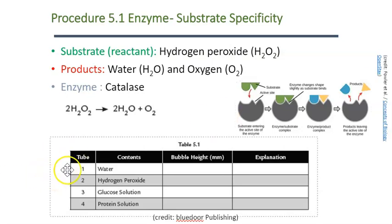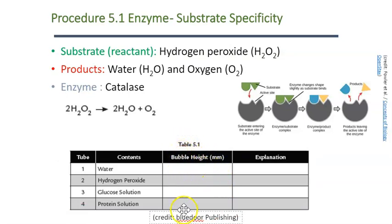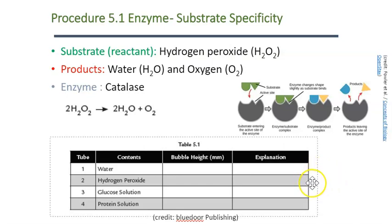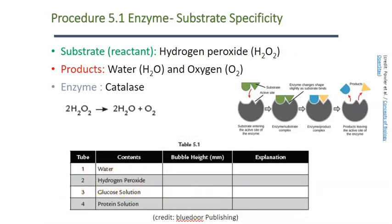We're going to put our enzyme catalase with water in one test tube, hydrogen peroxide in a second, glucose solution in the third, and a protein solution in the fourth. We're going to observe the oxygen gas produced in the form of little oxygen bubbles and measure that. What we're looking for is whether the catalase reacted with each substance — did it react with water, hydrogen peroxide, glucose, or the protein solution? We can determine that based on whether oxygen bubbles were produced when combined with the enzyme catalase.